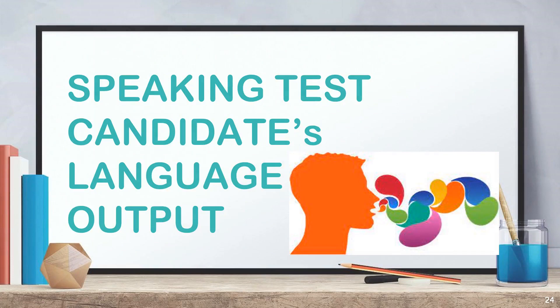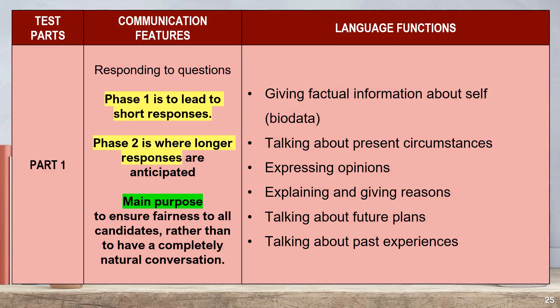Now, let's further look into the candidates' expected language outputs during the speaking test. In Part 1, candidates need to respond to questions. Phase 1 leads to short responses, whereas Phase 2 is where longer responses are anticipated. The main purpose is to ensure fairness to all candidates. The language functions expected from candidates in Part 1 are: giving factual information about self or bio data, talking about present circumstances or situations, expressing opinions, explaining and giving reasons, and talking about future plans or past experiences.